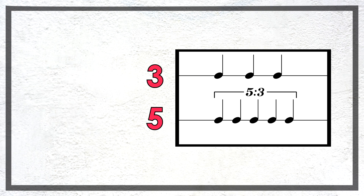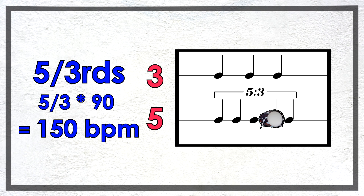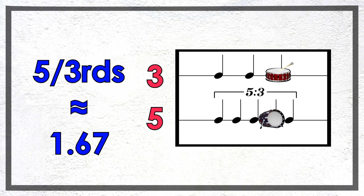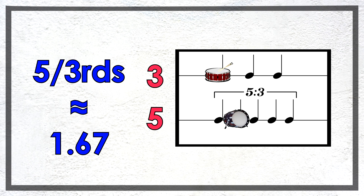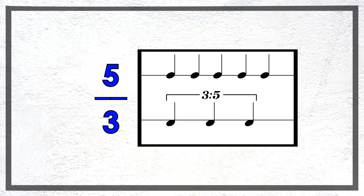Now let's say we played the three side along with the metronome. This means that the tempo of the five side would be five thirds the tempo of the three side, thus having a tempo of 150 beats per minute. We can also write five thirds as a decimal, which is about 1.67. Thinking of ratios can help us play polyrhythms since we can translate five over three as a five against three polyrhythm.